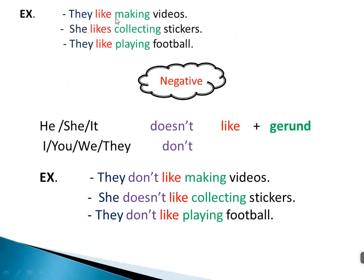Examples: 'They like making videos.' After 'like', the gerund is 'making' — verb plus '-ing'. Note: 'make' ends in 'e', so we drop the 'e' before adding '-ing'. 'She likes collecting stickers.' After 'likes', we use the gerund 'collecting' — verb plus '-ing'.